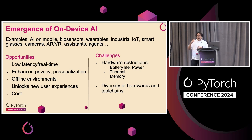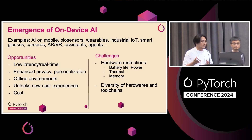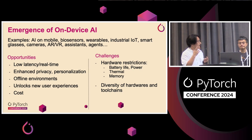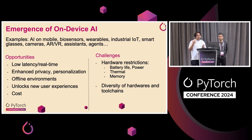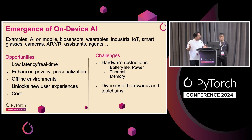Namely, the hardware has power restrictions, memory restrictions, and thermal restrictions. And even for embedded devices like smart glasses, you don't want to heat them up very much. From a software and hardware toolchain perspective, there is also a huge diversity of hardware available, which is a pretty hard problem right now.